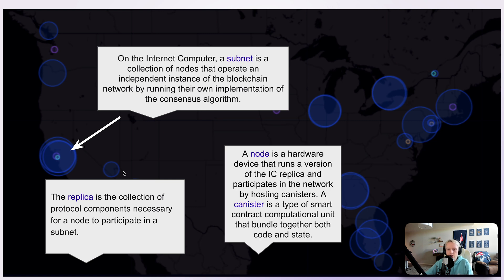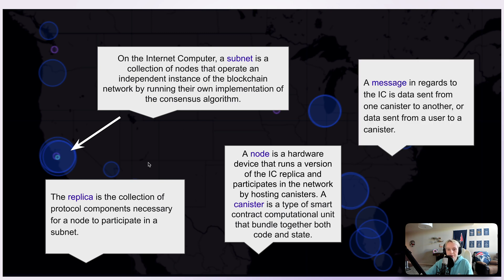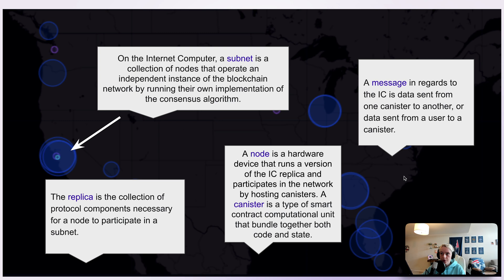A node is a hardware device that runs a version of the Internet Computer replica and it participates in the network by hosting canisters. A canister is a type of smart contract computational unit that bundles together both code and state. Subnets, canisters, and nodes all communicate with one another using messages. A message is data sent typically from one canister to another, or data sent from a user to a canister. If a canister is hosted on one node in the subnet, it's replicated on all nodes within that subnet. It can receive messages from a user through a traditional web browser or the command line, send messages to another canister on the same subnet, or send messages to canisters on other subnets using chain key cryptography.